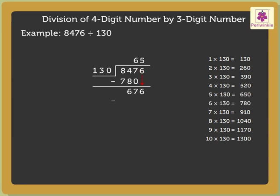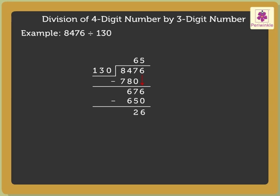Next, subtract 650 from 676, which is equal to 26. Now, as there are no more digits to bring down, we have finished our division. Therefore, the quotient is 65 and the remainder here is 26.